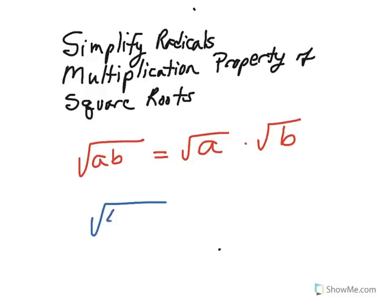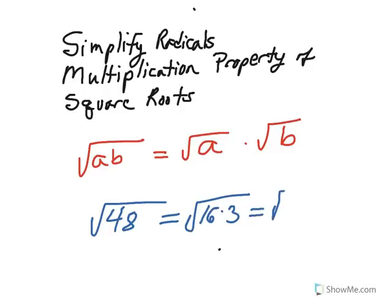For example, the square root of 48 can be written as the square root of 16 times 3, which is equal to the square root of 16 times the square root of 3. Pause the video if you need to copy these notes down.